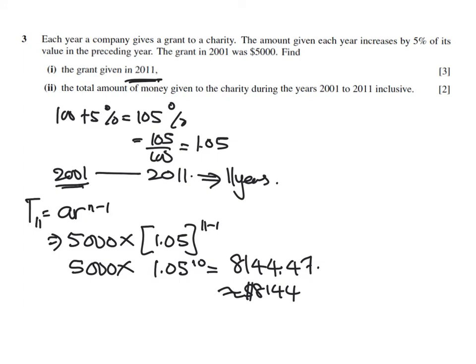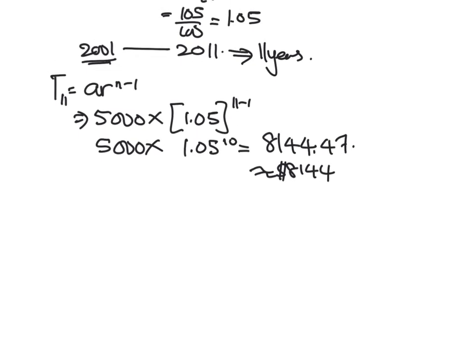Next question. The total amount of money given to the charity during the years 2001 to 2011. So this is the sum, the total. So the formula for sum will be A(R^N - 1) over (R - 1).